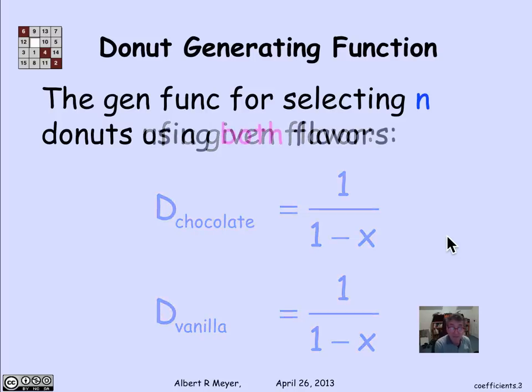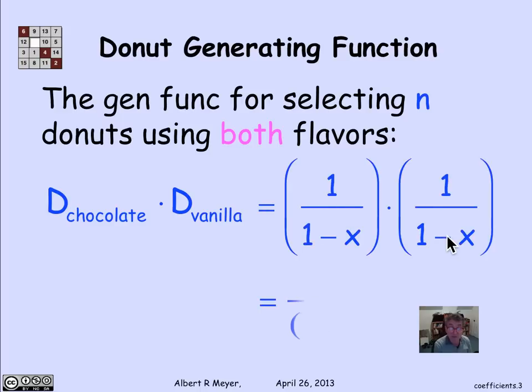And n of them is their product, D_chocolate times D_vanilla, or 1 over (1 minus x) squared.